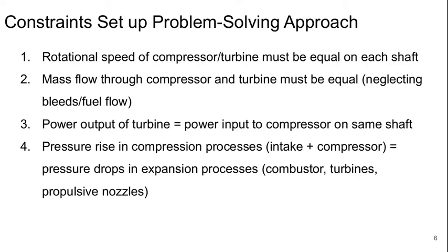Here are the four constraints. One, the rotational speed of the compressor and the turbine must be equal on each shaft. Two, the mass flow through the compressor and the turbine must be equal if we neglect any bleeds or fuel flow.